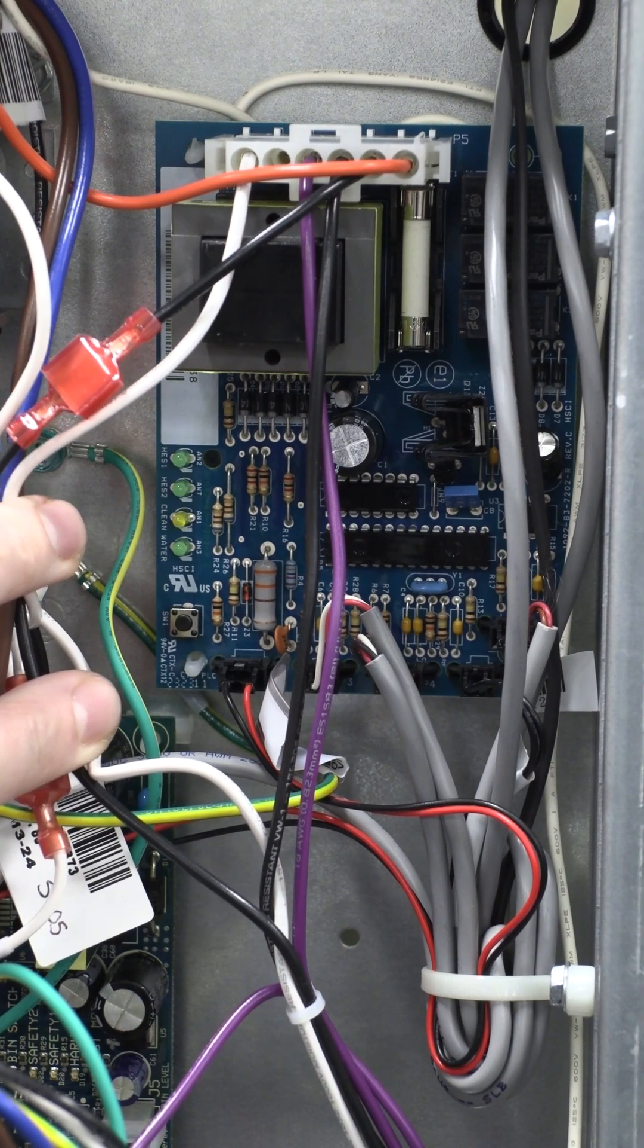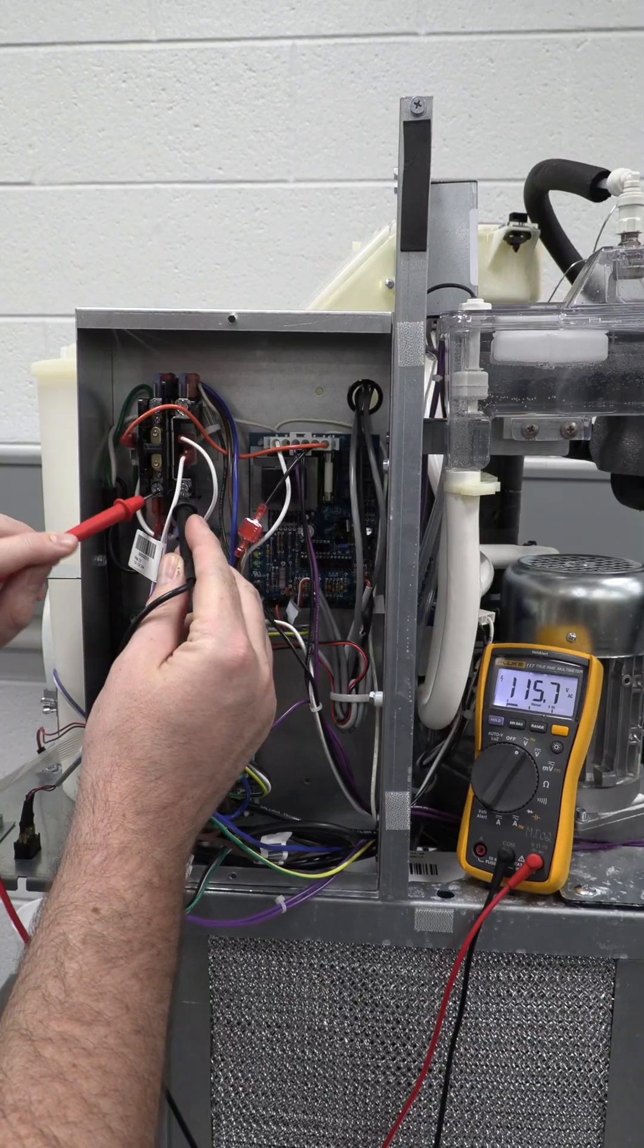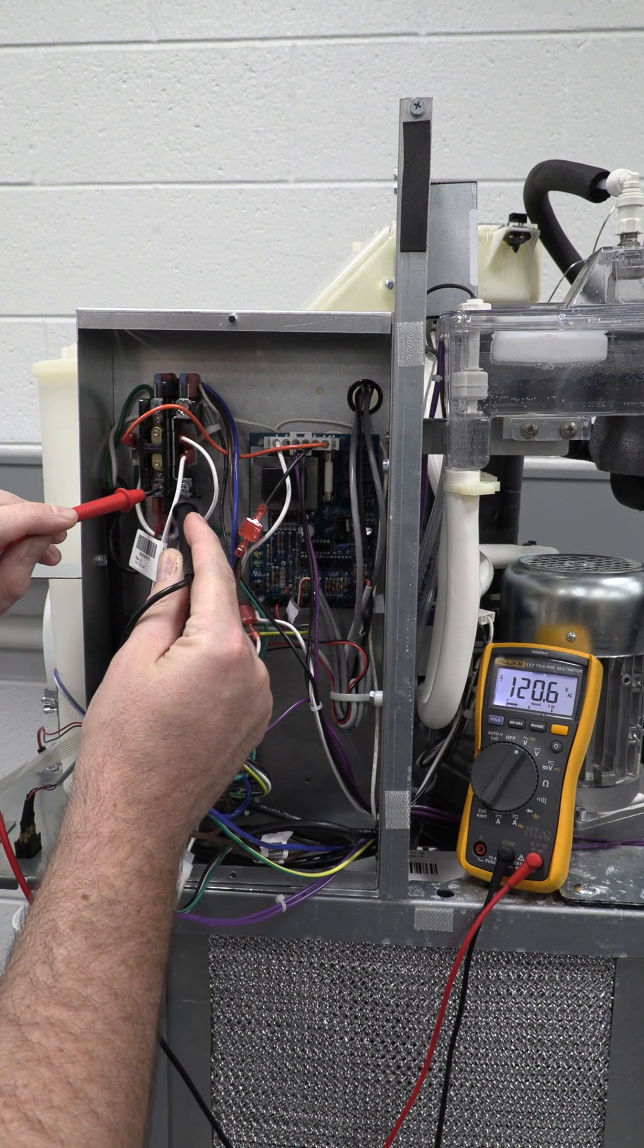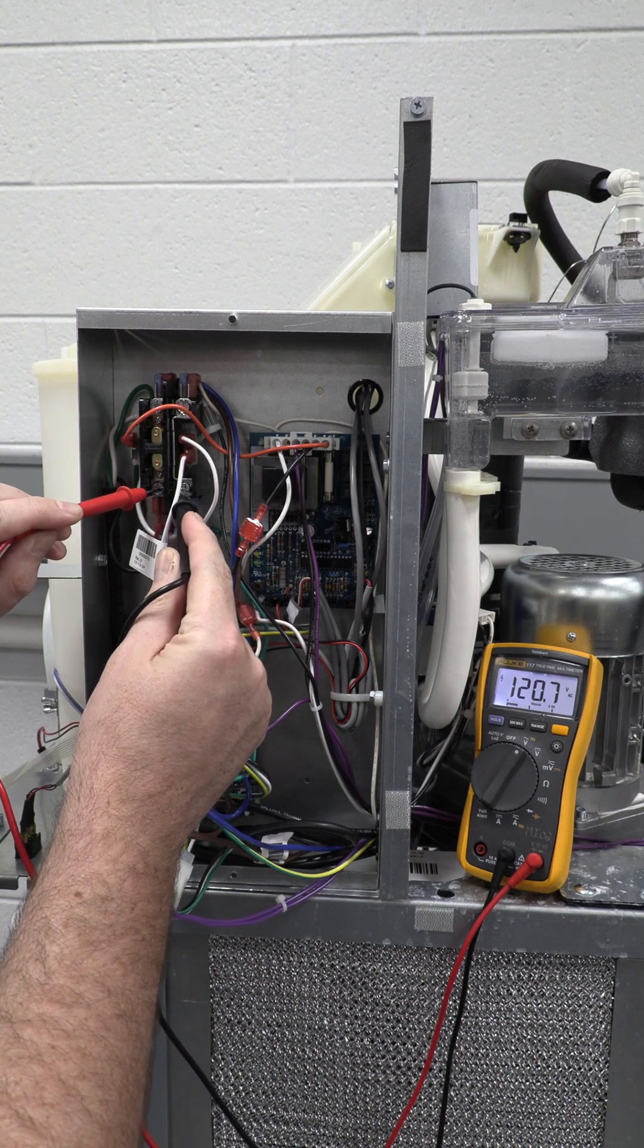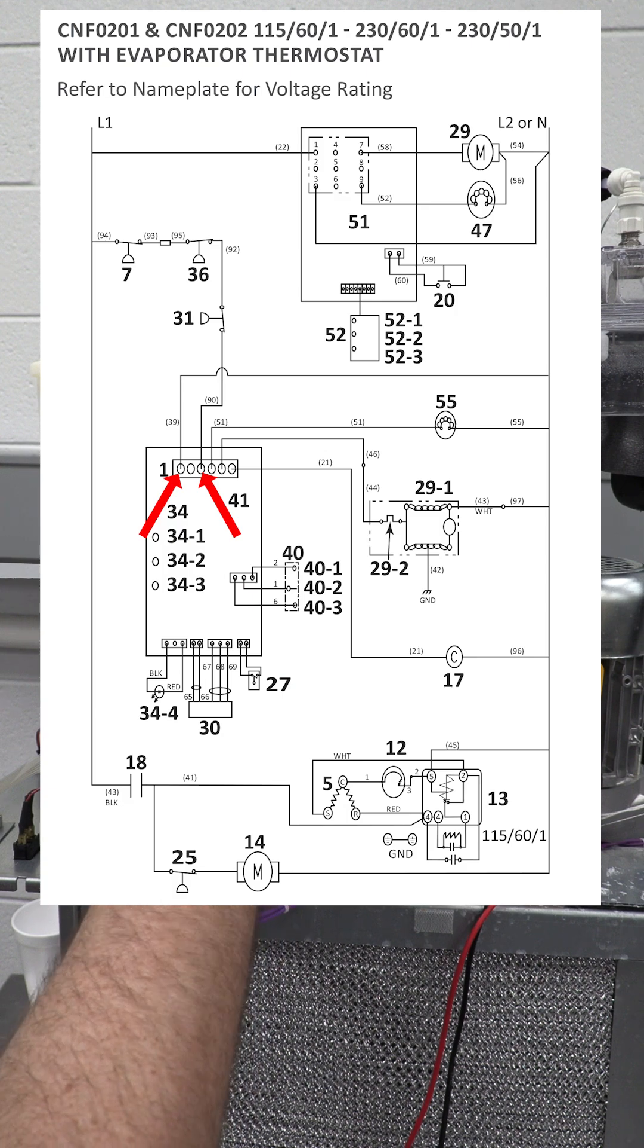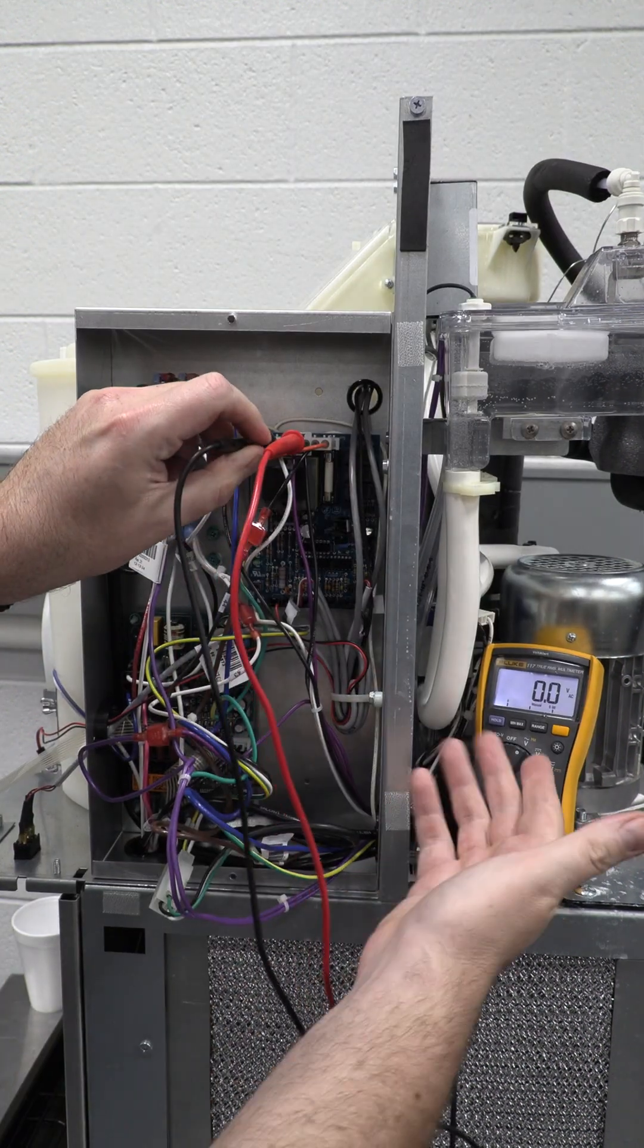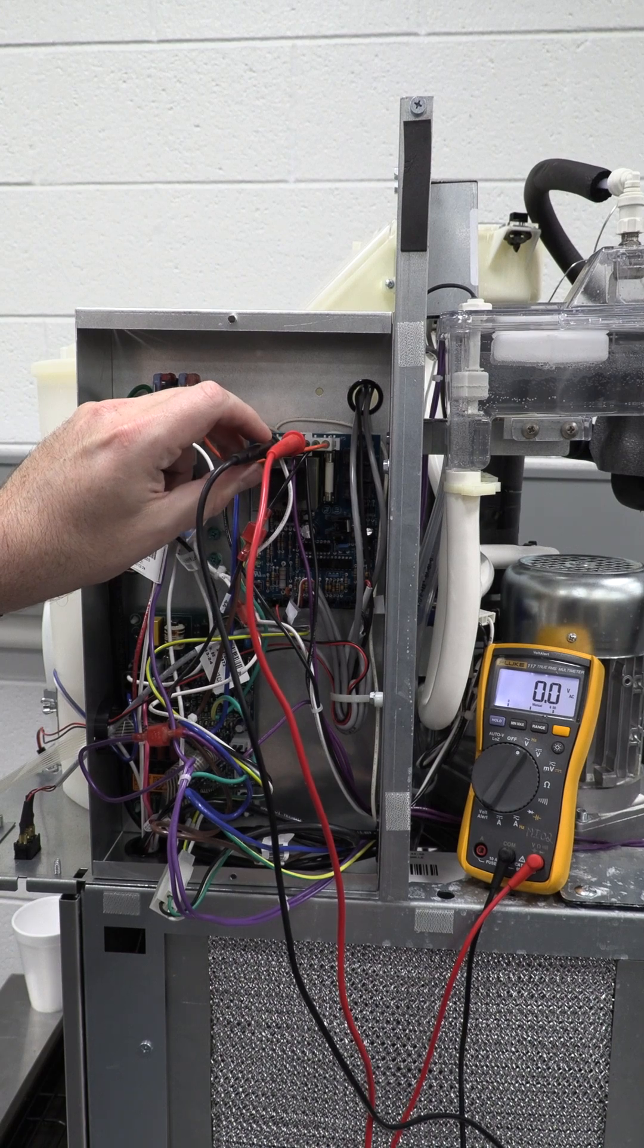If we take a look at our top board, which is our ice making board, you see that none of the lights are lit on this particular machine. We bring our line voltage in on the bottom, so you can see I have good line voltage coming into the machine. Next thing we're going to do is check for power between the purple wire and the white wire on the six pin connector, and as you can see I do not have voltage coming into this board.